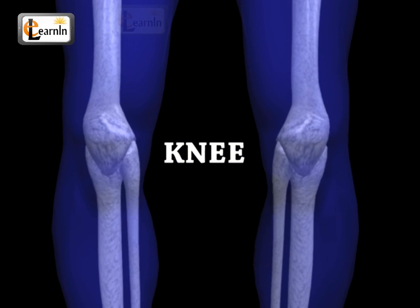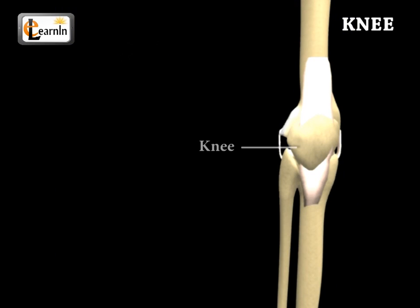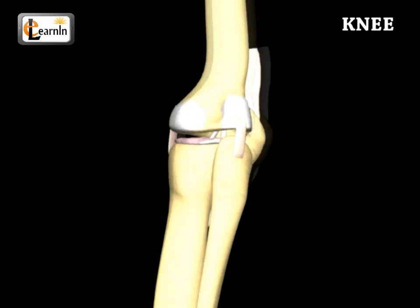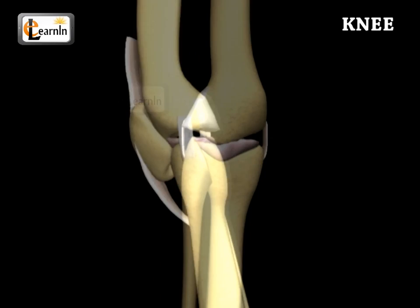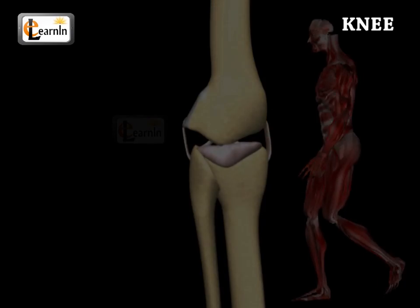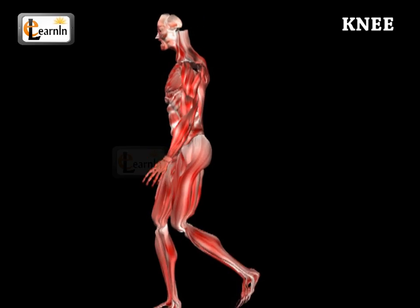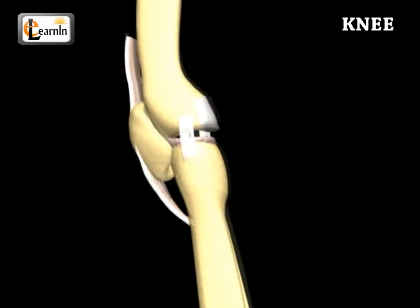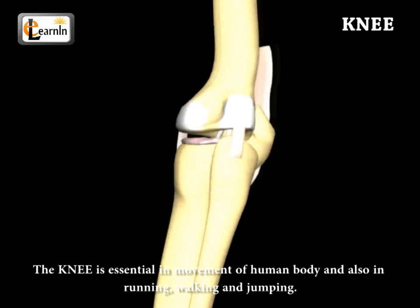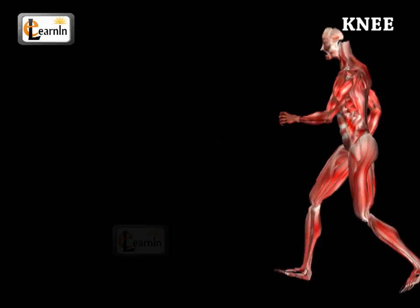Human Anatomy: The Knee. This video illustrates one of the most used parts of the human body, the knee. One can understand the intricacies of the movements of the knee by getting familiar with the joints and the bones which form the region of the knee, and the set of complex muscles which make it so easy for humans to move their legs. The knee is one of the most important joints of our body, essential in moving the human body and also in running, walking, and jumping.